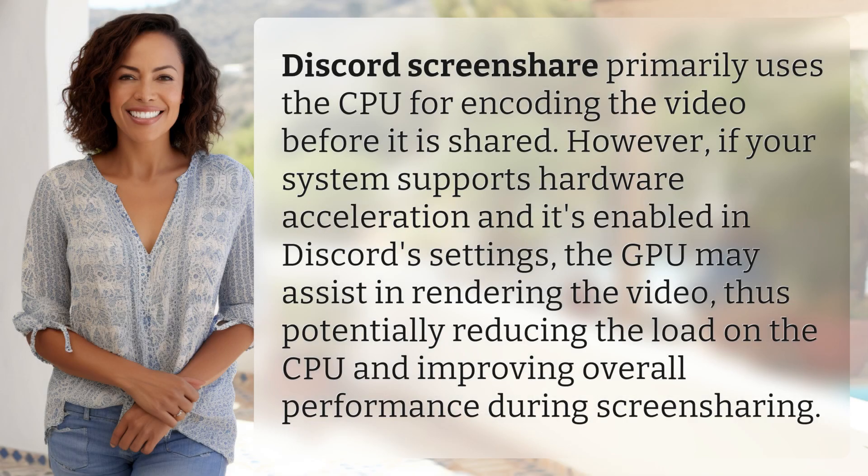Discord screen share primarily uses the CPU for encoding the video before it is shared. However, if your system supports hardware acceleration and it's enabled in Discord settings, the GPU may assist in rendering the video, thus potentially reducing the load on the CPU and improving overall performance during screen sharing.